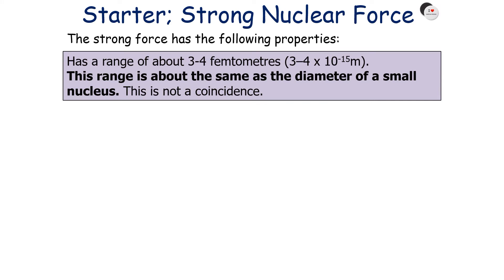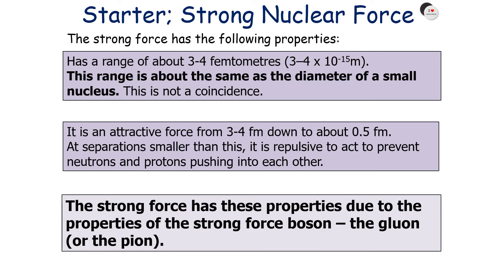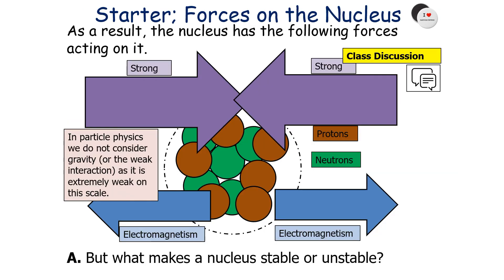The strong force has the following properties: it has a range of about 3 to 4 femtometres, which is about the same as the diameter of a small nucleus — and that's not a coincidence. It's an attractive force from 3 to 4 femtometres down to about 0.5 femtometres. At any separation smaller than 0.5 femtometres, it becomes repulsive to prevent neutrons and protons pushing into each other. The strong force has these properties due to the properties of its exchange particle — the strong force boson, the gluon or the pion.